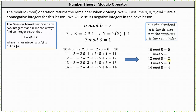Thirteen divided by five is equal to two remainder three, which indicates 13 mod five is equal to three. And finally, 14 divided by five is equal to two remainder four, which indicates 14 mod five is equal to four. Four is the remainder when 14 is divided by five.